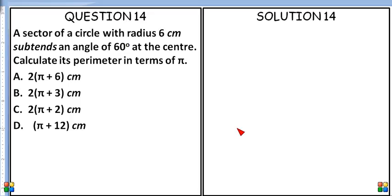Shall we see question 14 now? A sector of a circle with radius 6 cm subtends an angle of 60 degrees at the center. Calculate its perimeter in terms of π.